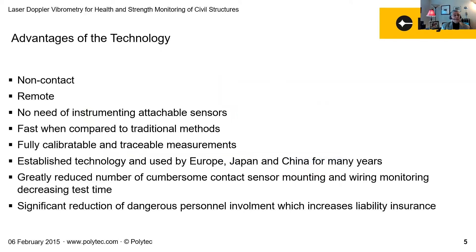What are the advantages of the technology? First of all, it's non-contact and remote — you don't need instrumentation with attachable sensors — and it's fast compared to traditional methods. It's fully calibratable every two years and traceable to standards. It's established technology that has been used in Europe, Japan, and China for many years, and it gradually reduces the number of cumbersome contact sensors for mounting, wiring, and monitoring, as well as the calibration for each one every time you make a new measurement. It also reduces the liability insurance for personnel involved in attaching sensors in precarious locations.